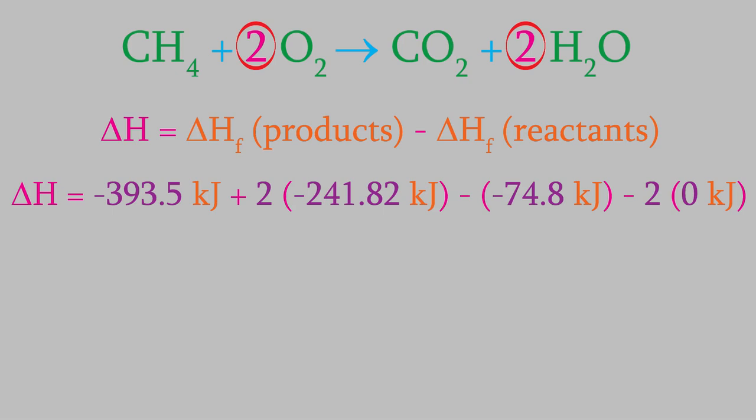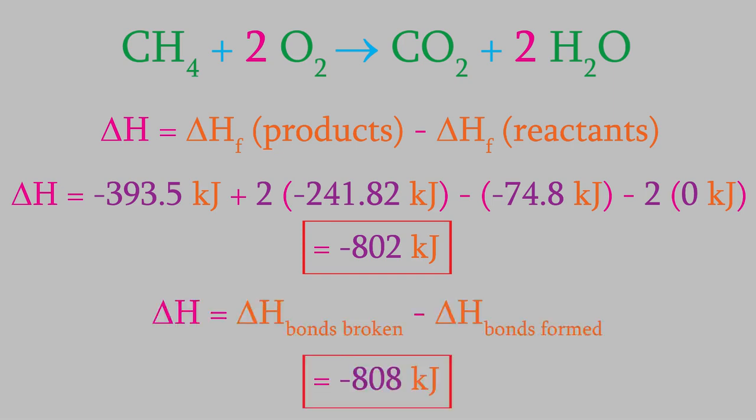When we perform the calculation, we get negative 802 kilojoules. That's pretty close to what we got using the bond enthalpies, which was negative 808 kilojoules. But why didn't we get exactly the same answer?